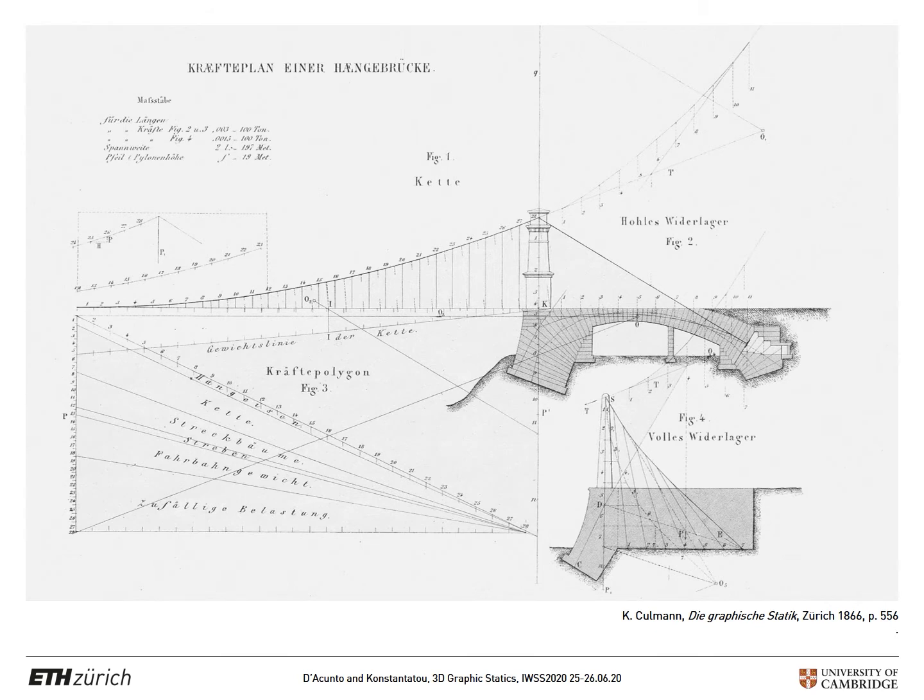Graphic statics developed into an autonomous discipline during the 19th century. In this regard, particularly relevant is the contribution of Karl Culmann, who first formalized the methodologies of graphic statics.